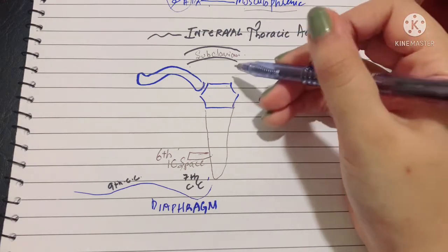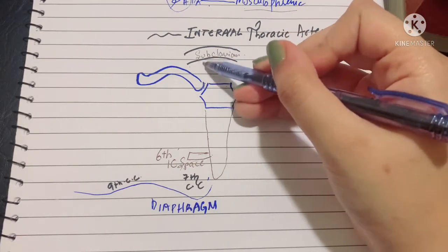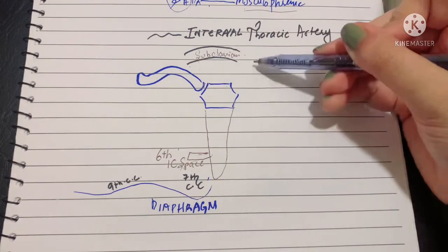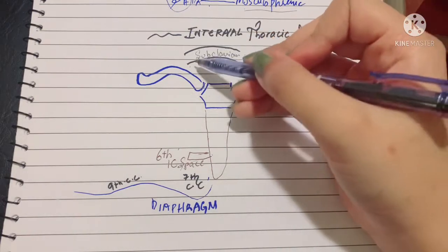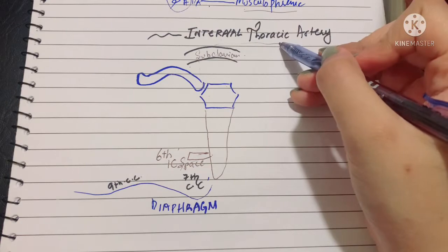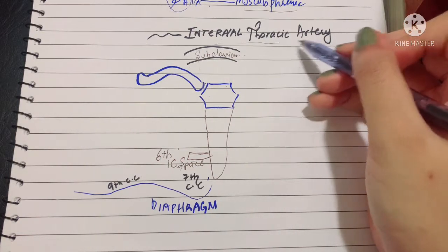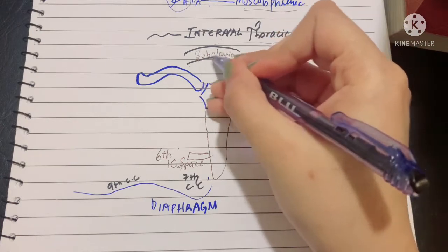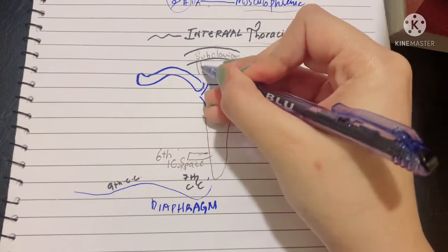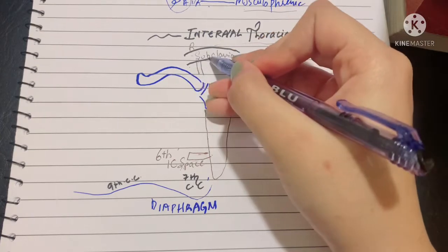I want you to remember that whatever I talk about on one side, the exact same thing is happening on the other side as well. Let's talk about the origin of the internal thoracic artery. The internal thoracic artery arises from the inferior aspect of your subclavian artery—on the right from the right subclavian artery and on the left from the left subclavian artery.